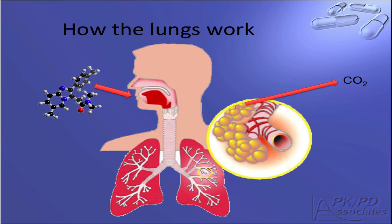The lungs are often overlooked as a clearance organ, but all blood travels through the lungs, where volatile compounds can be eliminated by traversing the thin mucosal membranes in the lungs.